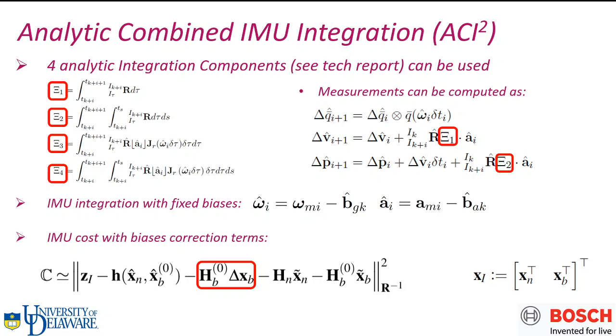We want to note that during the integration, in order to get the angular velocity and linear acceleration, we need to fix the bias states. As we have talked in the partial fixed estimator, if we fix states in the least squares, we need to add the correction terms to compensate for the linearization point change, like the delta XB in this IMU cost.